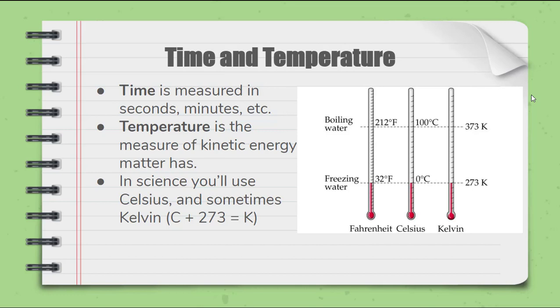Last couple things we want to talk about, time. Time in this class is measured in seconds and minutes just like everywhere else in the world. That sounded really sarcastic and in a way it kind of was. Temperature is the measure of kinetic energy that matter has. In science you'll primarily use the Celsius scale but sometimes you'll use Kelvin or C plus 273 equals Kelvin. So if you look here, we're probably most familiar with the Fahrenheit temperature scale. The Fahrenheit temperature scale has water freezing at 32 degrees Fahrenheit and boiling at 212 degrees Fahrenheit. Celsius is nice because water freezes at zero and boils at 100 and then everything else is scaled based on that. Kelvin is what's known as an absolute temperature scale meaning that there are no values below zero. That's why the numbers are so high. Freezing water is 273 Kelvin while boiling water is 373 Kelvin. Notice that there is a 100 degree difference between Celsius and 100 number difference between Kelvin. So they're similar scales. The only difference is one has 273 added to it.